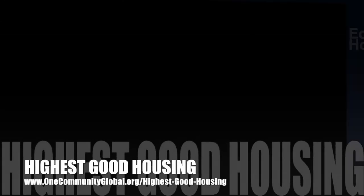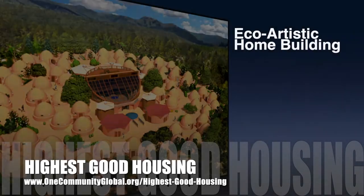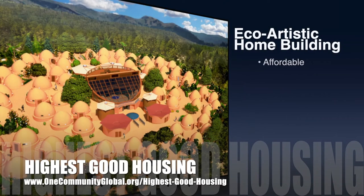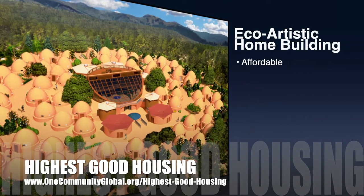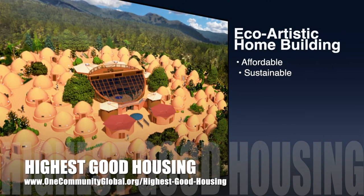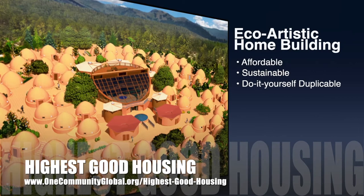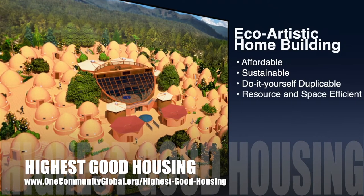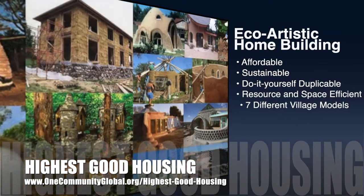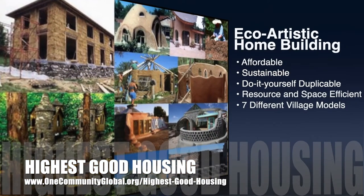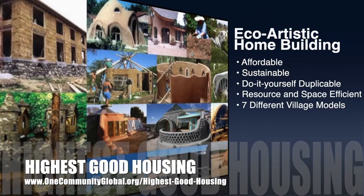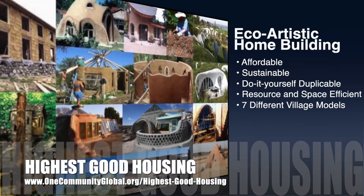The One Community approach to Highest Good Housing is eco-artistic home building that is affordable, sustainable, do-it-yourself, duplicable, resource and space efficient, and consists of seven different sustainably constructed village models.